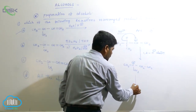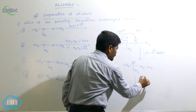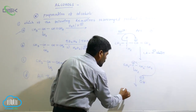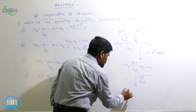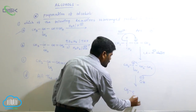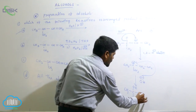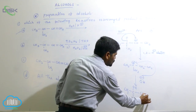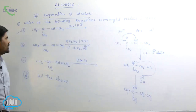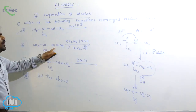Finally, OH⁻ is added to the tertiary carbocation, giving a 3° alcohol as the rearranged product — CH3C(OH)(CH3)CH2CH3 type structure. So the answer is option A — the first option is correct.